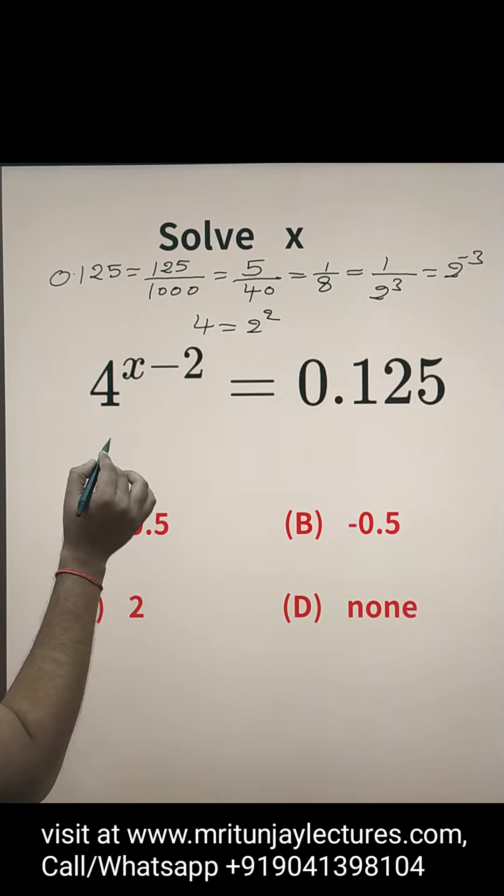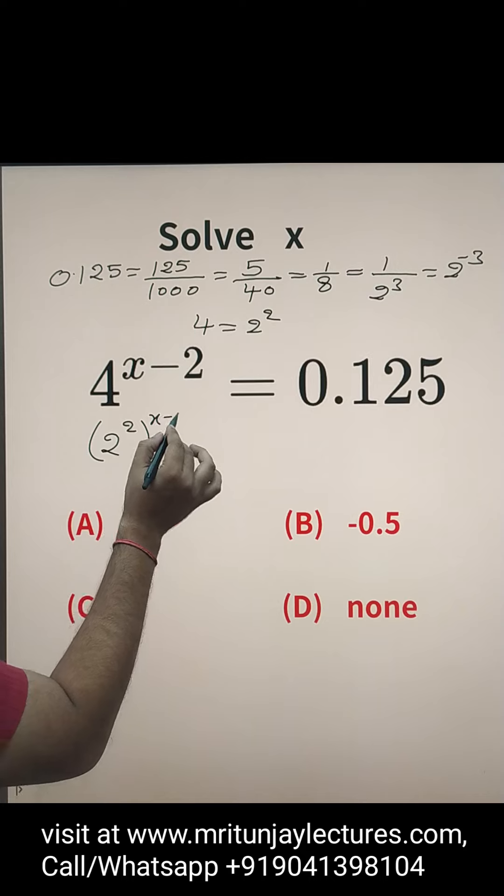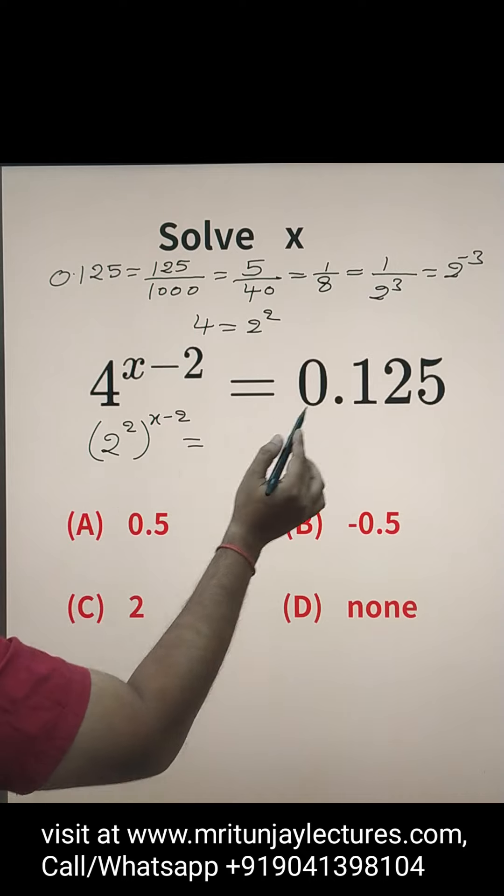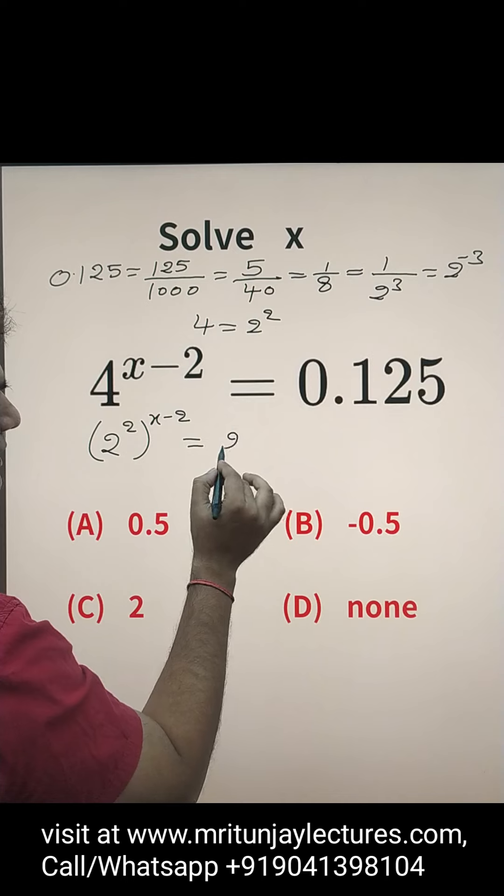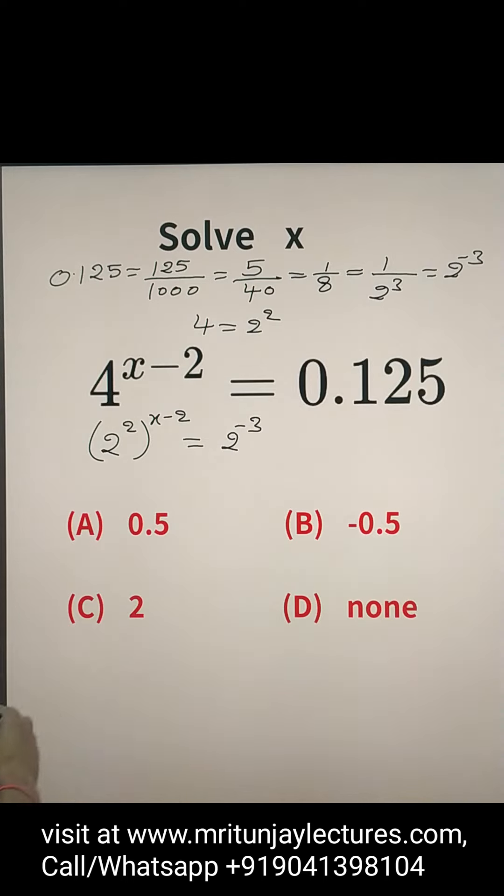So that one written 2 to the power 2 to the whole power x minus 2 is equal to 2 to the power minus 3.